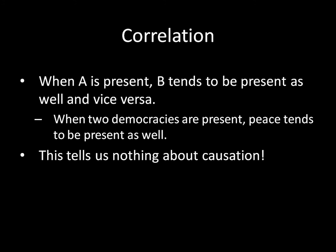Correlation does not imply causation. Just because we know that when two democracies are present, peace tends to be present as well doesn't mean that democracy is actually causing the peace. There could be a whole bunch of other factors which still explain this correlation — the fact that we have democracy and peace going hand in hand — but don't actually have it in a way that democracy is causing the peace. In this video, we're going to look at a whole bunch of different ways that we can see a correlation and still have no sort of causation in the direction that we thought.